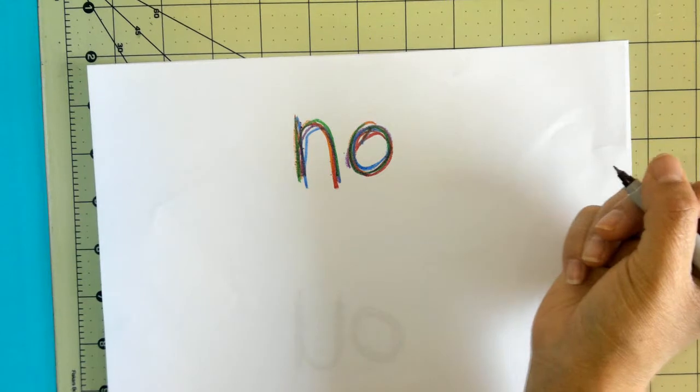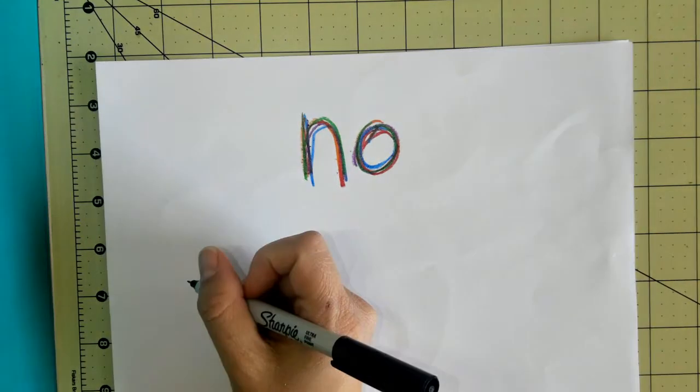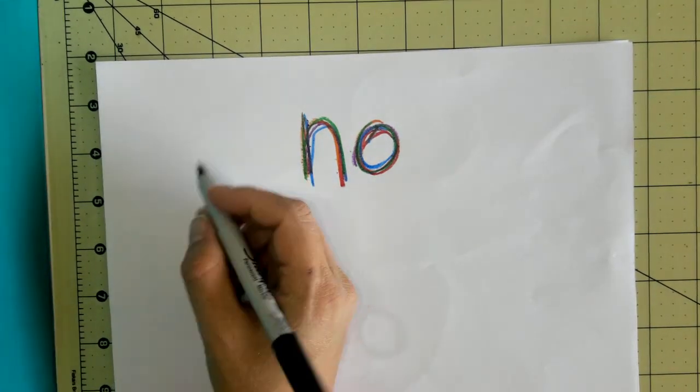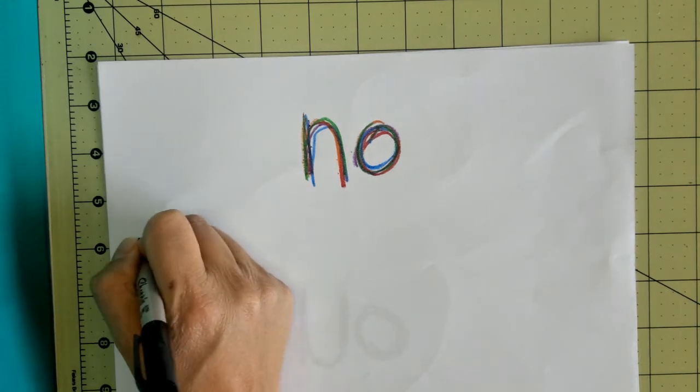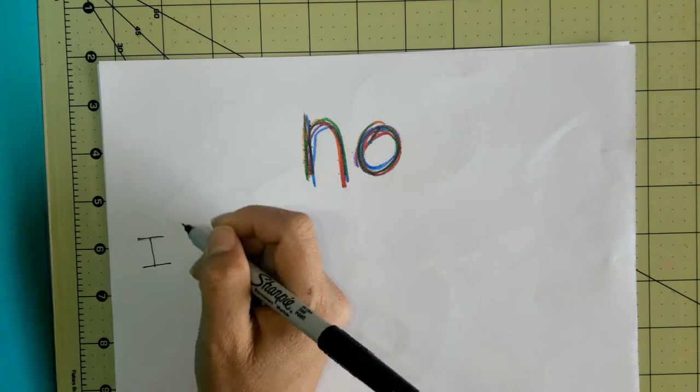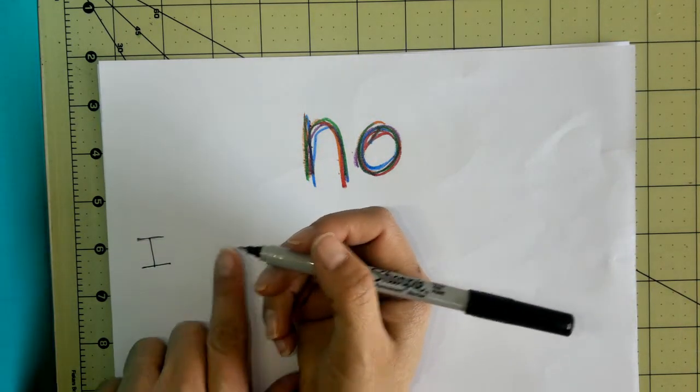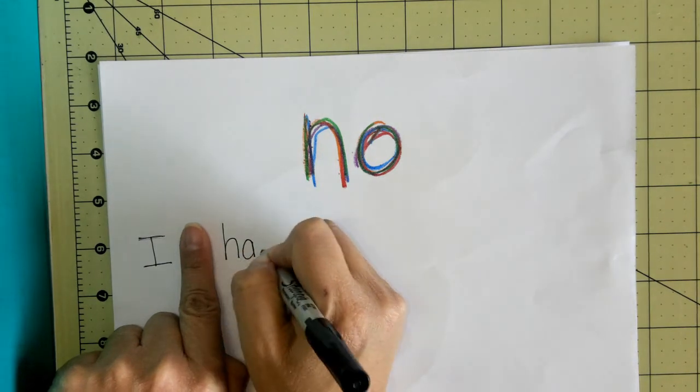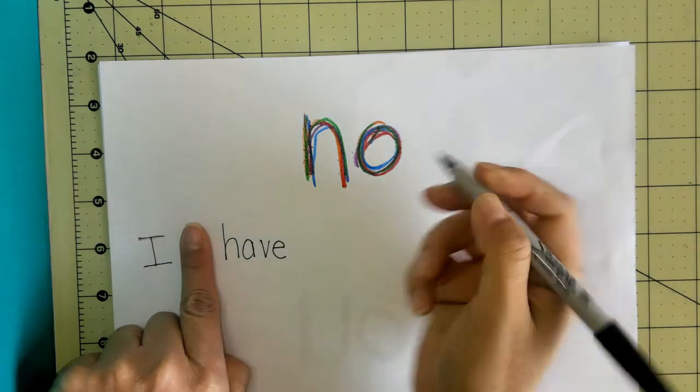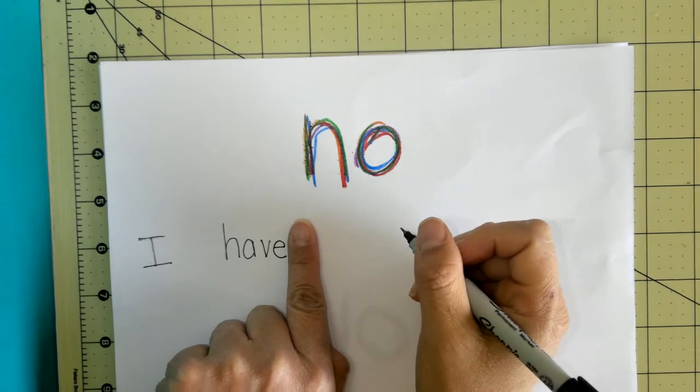Okay, so let's write that sentence. I have no candy. We're going to start with an uppercase letter, because that's how we start our sentences, with uppercase. So uppercase I, fingerspace, have. Have is one of our sight words. It's H-A-V-E. Fingerspace no.